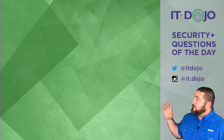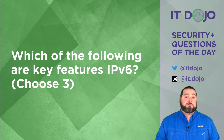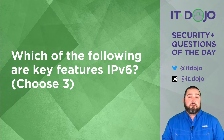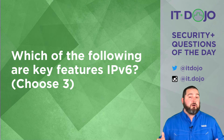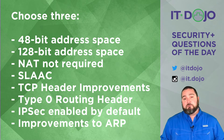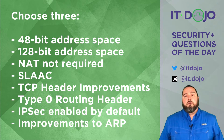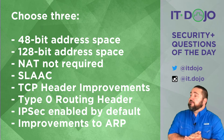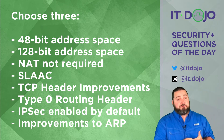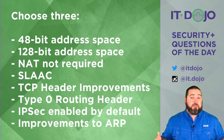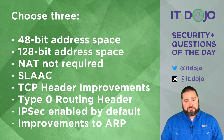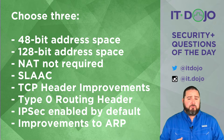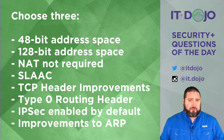Which of these are key features of IPv6? Go ahead and click pause, give those a read, and then we'll talk about each one of them when you're ready. The first two answer choices give you a choice between a 48-bit and a 128-bit address space. It's a 128-bit address space.